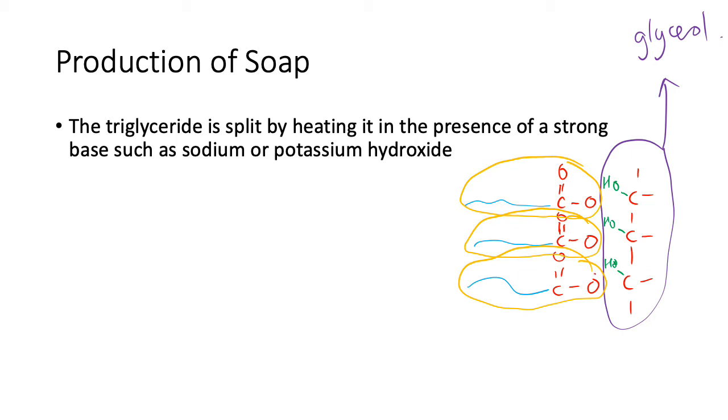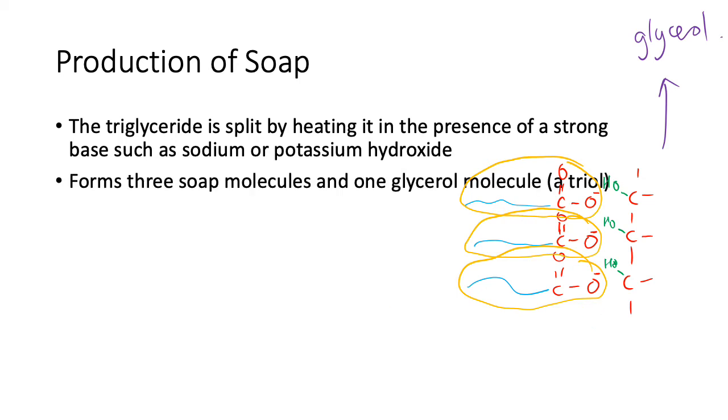Remember that this is charged. Where is the positive charge? You have to always have a positive charge—it's in that sodium which was bonded to the OH minus which broke up that ester. So it's sodium hydroxide or potassium hydroxide. You'll end up with these ones with a sodium ion on the end. Forms three soap molecules and one glycerol molecule, which is a triol.